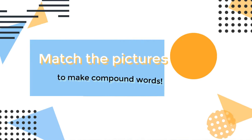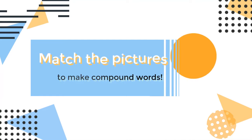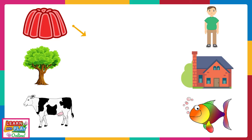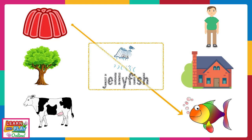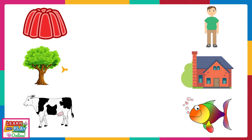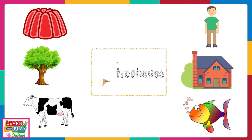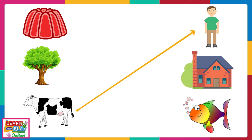Here are the last questions for today's video. Match the pictures to make compound words. Jelly and fish make jellyfish. Tree and house make treehouse. Cow and boy make cowboy.